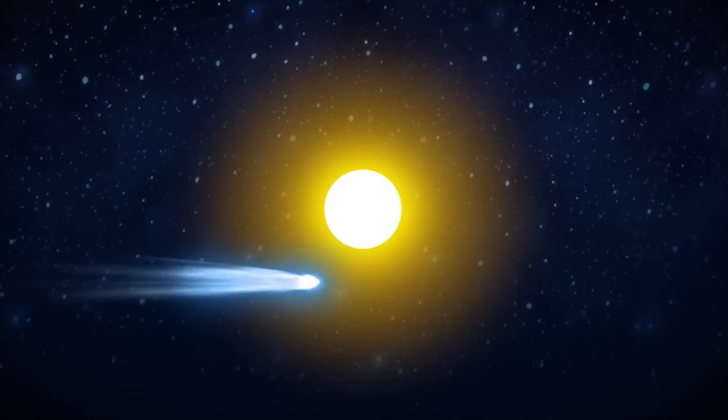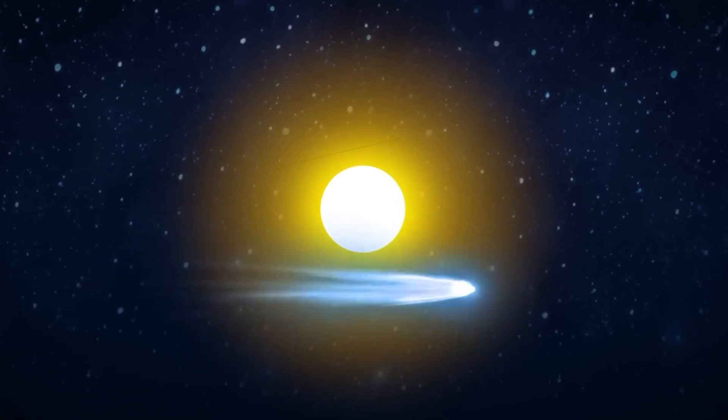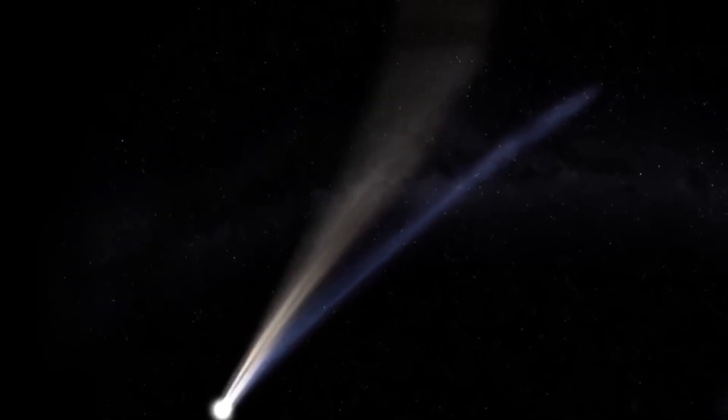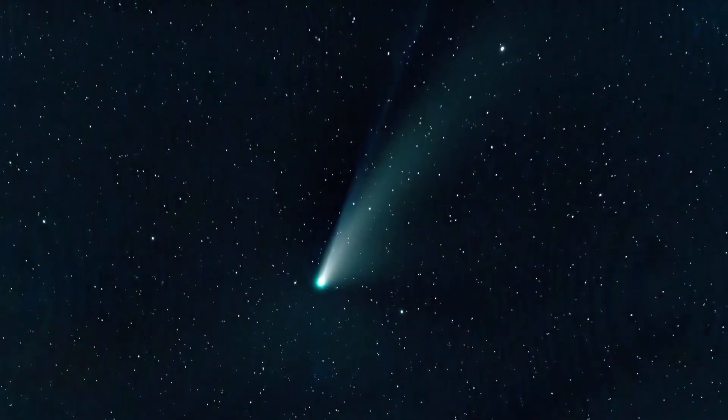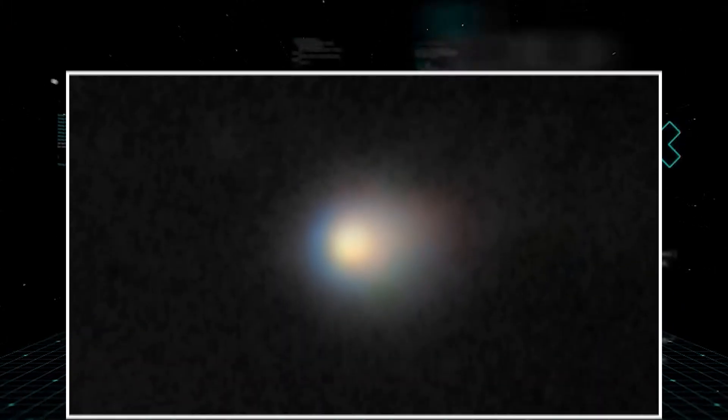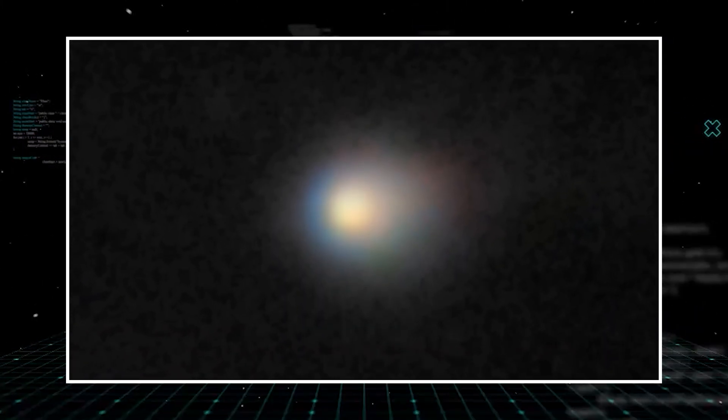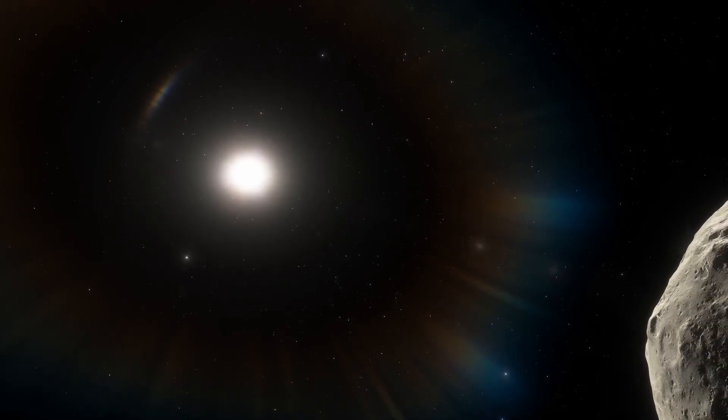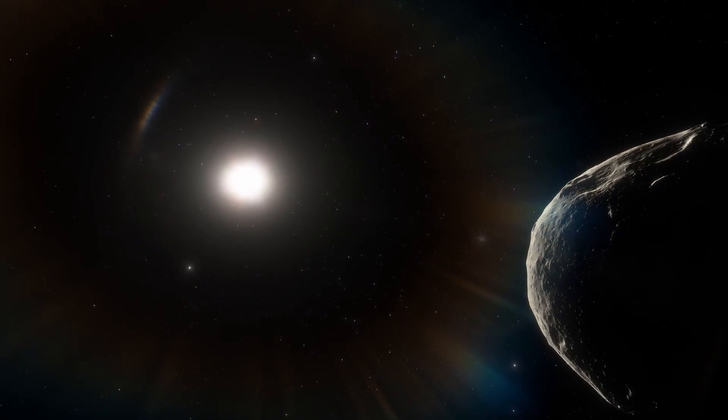The kicker here is that this outgassing isn't always uniform or predictable. A sudden burst of activity, a powerful jet of gas, could act like a small thruster, slightly altering the comet's path or, more significantly, expanding its hazardous dust cloud. Imagine a cosmic smoke bomb, unpredictably increasing its size and obscuring its true path.